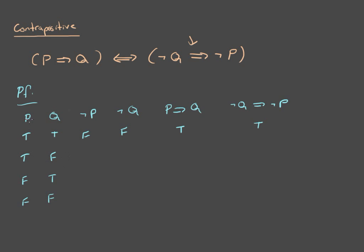Now, if this is true, its negation will be false. And if Q is false, its negation will be true. If you have a false conclusion and a true premise, then this statement is false. That's the only time that this is false — when you have a true premise and a false conclusion. And now looking at not Q implies not P: not P is false and not Q is true, so it's the exact same thing — a true premise and a false conclusion — so this is false.